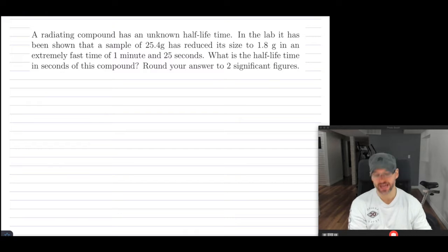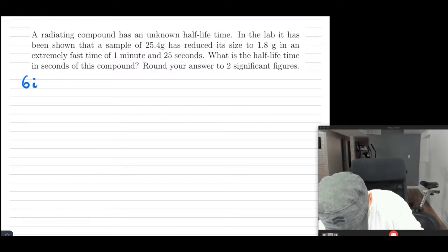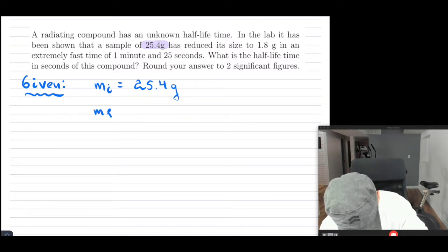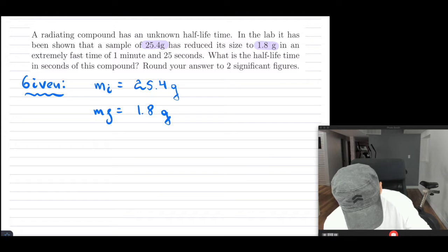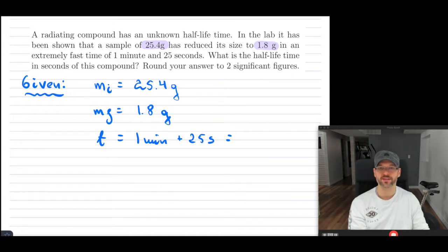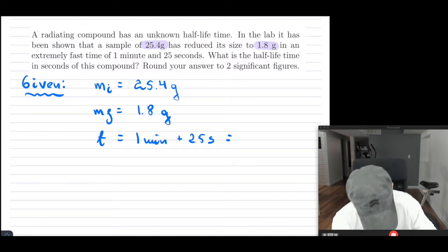So let's take a look and see what we have given. This is all about masses. We started with an initial mass MI of 25.4 grams. The final mass MF was 1.8 grams. And that happened very quickly in time T, 1 minute and 25 seconds. So 1 minute is 60 seconds, so I'm going to convert this to make it consistent. That's going to be 85 seconds in total.